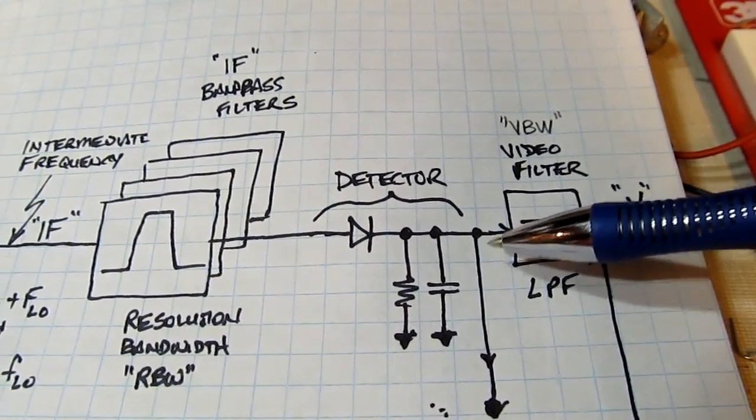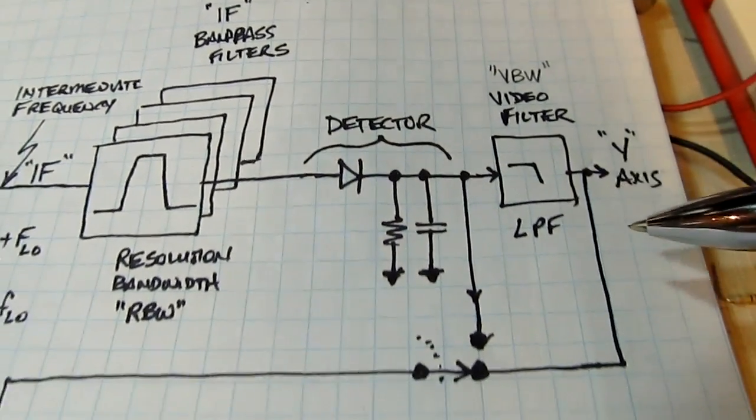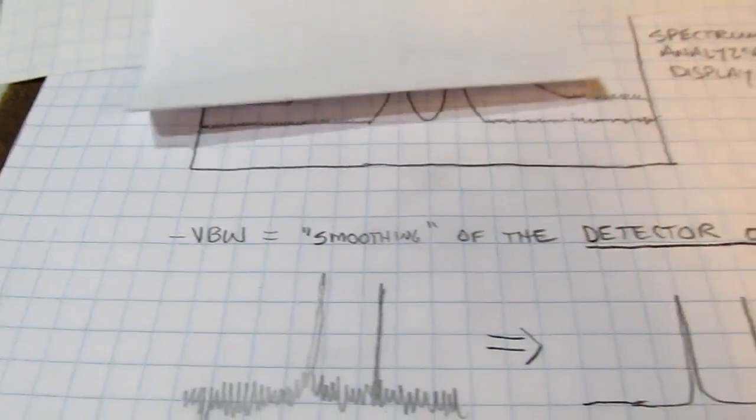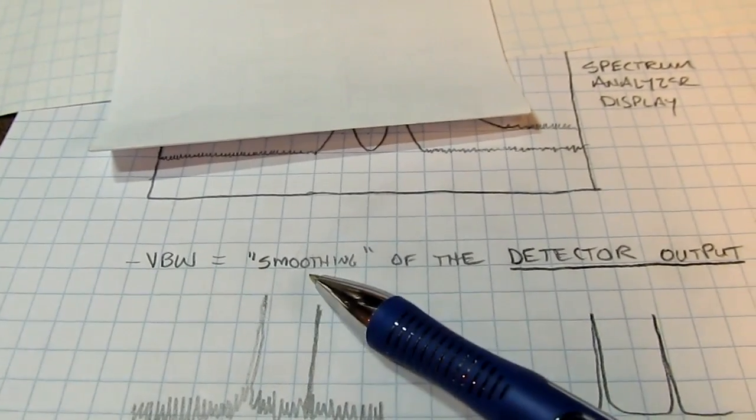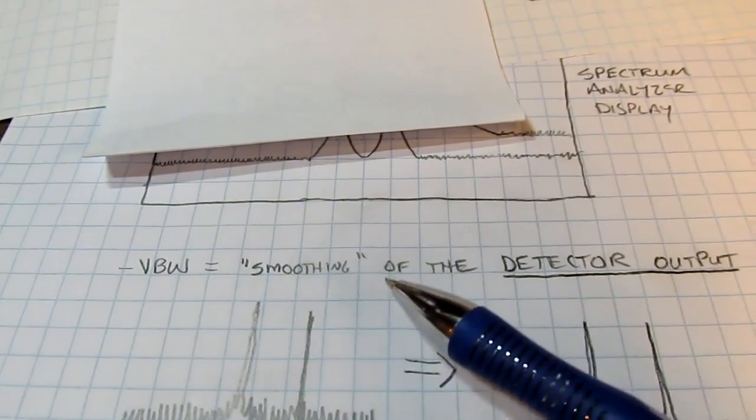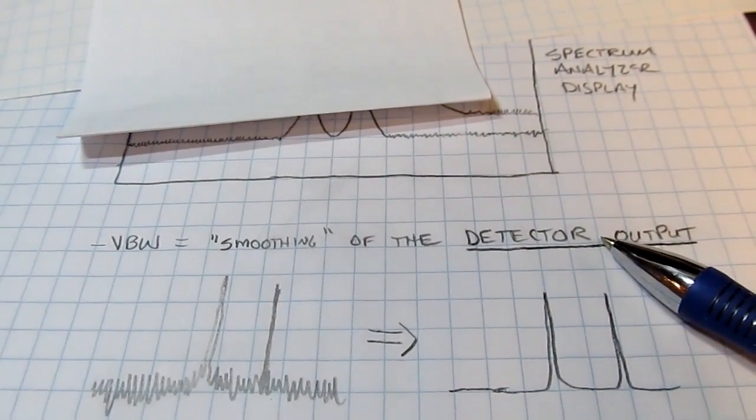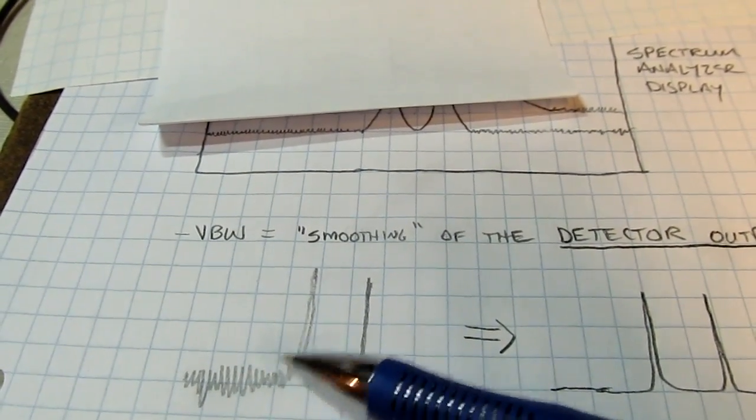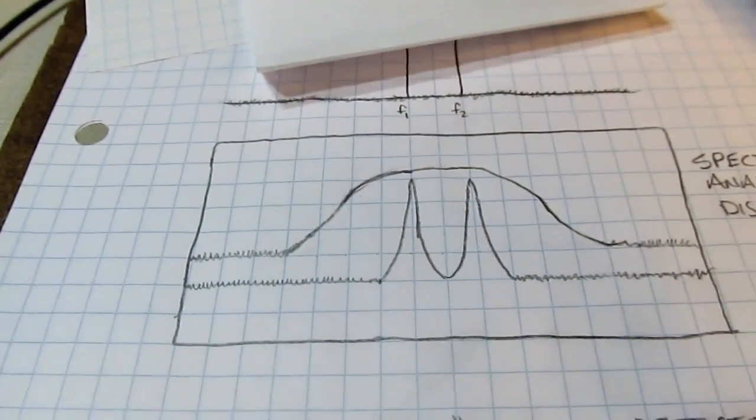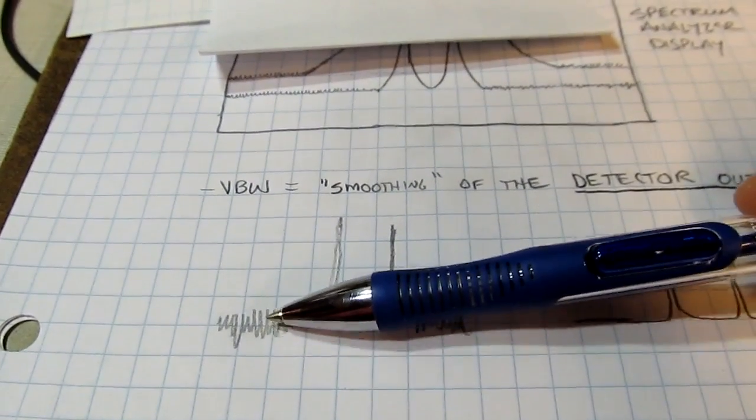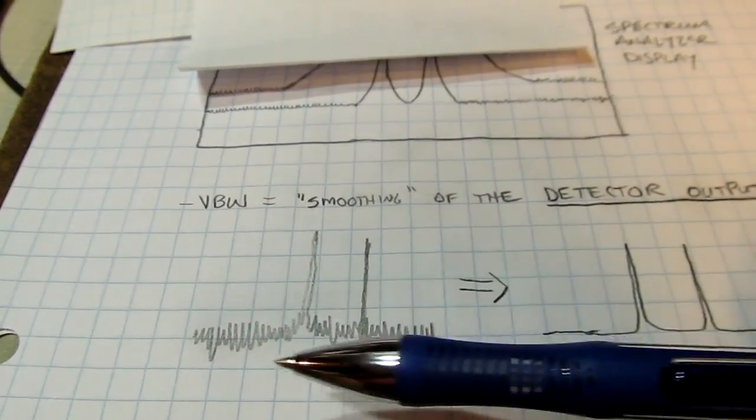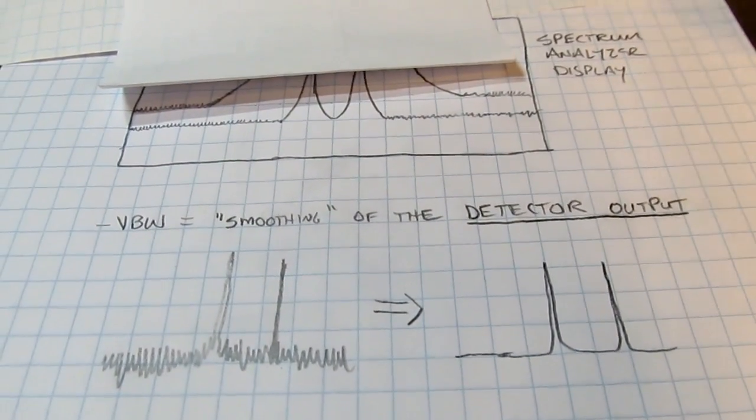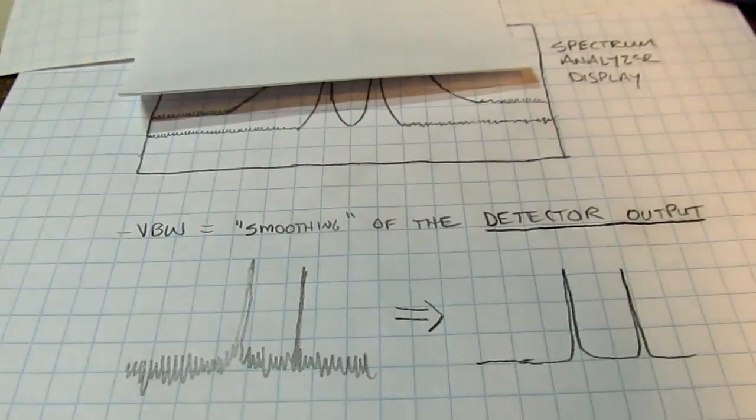The video bandwidth filter, or the video filter, essentially reduces the amplitude of that noise. And it really just has the effect, effectively, of smoothing the output from the detector. So the video bandwidth is really a smoothing filter, in a sense, of the detector output. It will not have any effect on the level of the noise, like the resolution bandwidth did. It's only going to have effect, essentially, on the peak-to-peak magnitude of it. So it can smooth the trace out to make it easier to measure where the noise floor is.